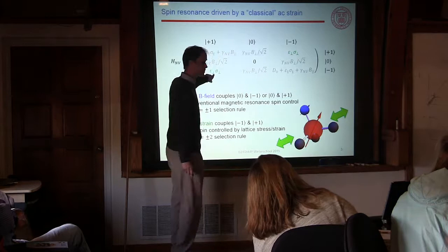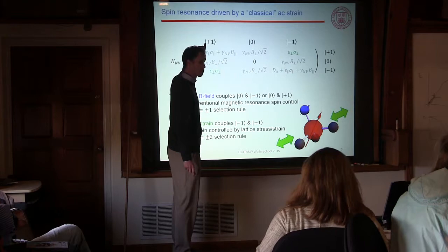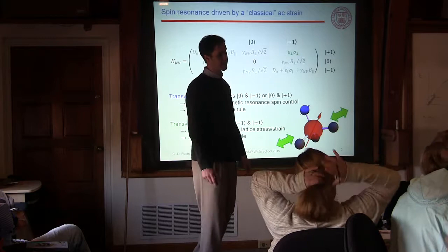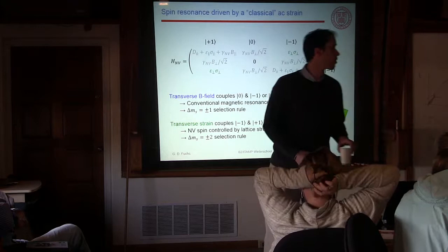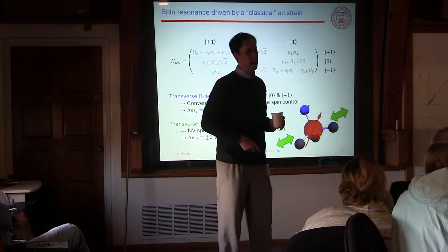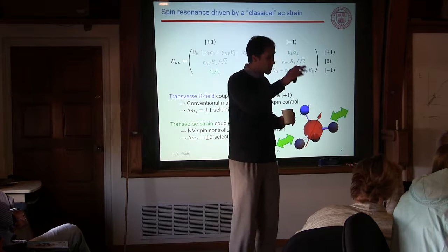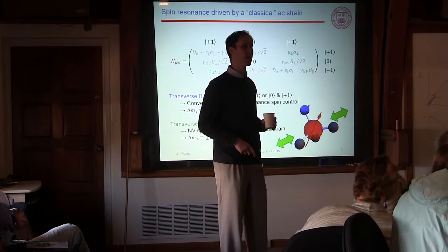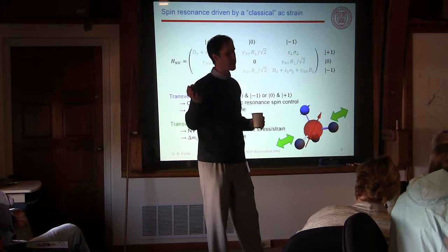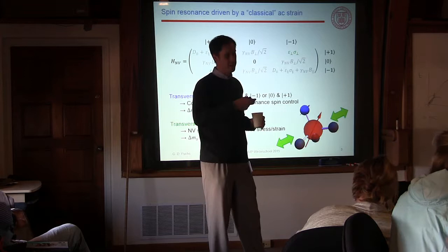The perpendicular stress term couples plus-one to minus-one — that's a plus or minus two transition. From a conservation perspective, phonons can actually carry angular momentum, analogous to how an oscillating electromagnetic field can be decomposed into left and right circular components. This is the correct interpretation here. Phonons in crystals can carry essentially arbitrary quanta of angular momentum — that's exactly what couples in these experiments.